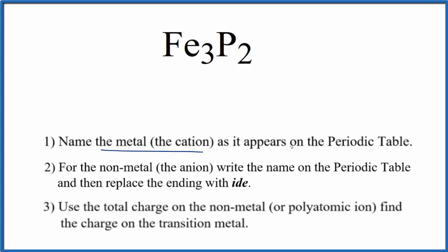First, we write the name for the metal as it appears on the periodic table. That's the iron here. So Fe, iron.